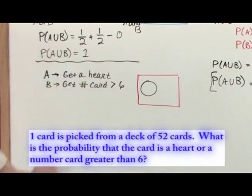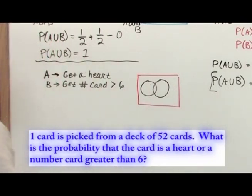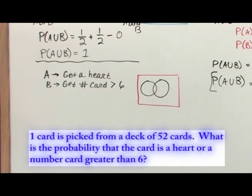Is it possible for A and B to happen at the same time? Can I have a heart and also a number card greater than six? Of course you can. You can pull a seven of hearts or an eight of hearts or a nine of hearts or a ten of hearts, and that would be a valid intersection of these two events with A and B happening at the same time. So this Venn diagram is actually going to have some overlap unlike the last one.